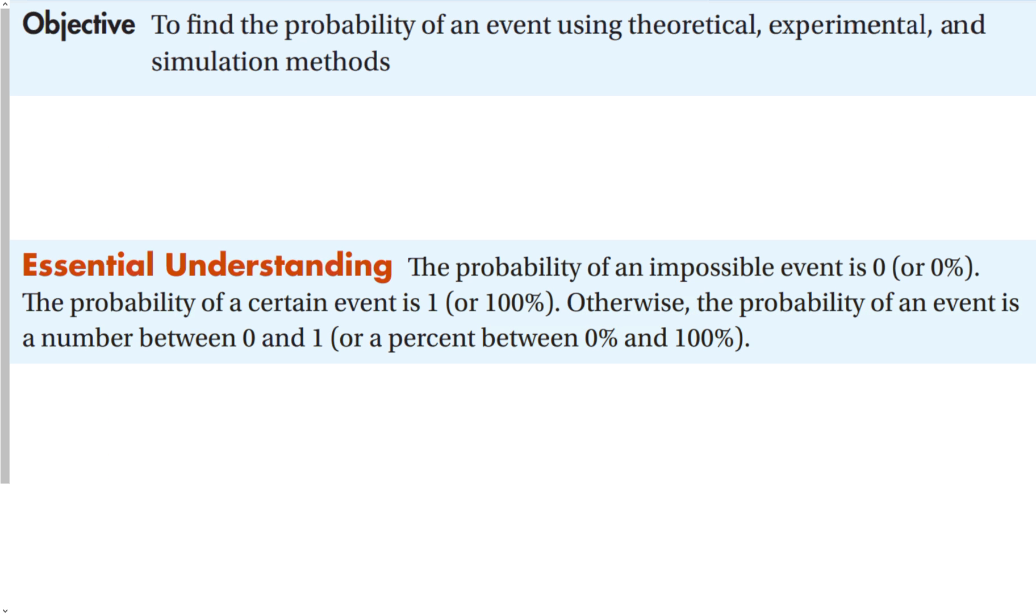Our objective for this section is to find the probability of an event using theoretical, experimental, and simulation methods. What you should know about probability by the end is that the probability of an impossible event is 0, 0%. The probability of a certain event is 1, 100%. Otherwise, the probability of an event is a number between 0 and 1, or a percent between 0 and 100%.